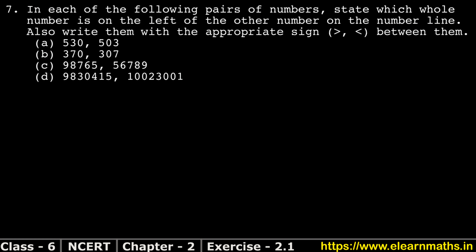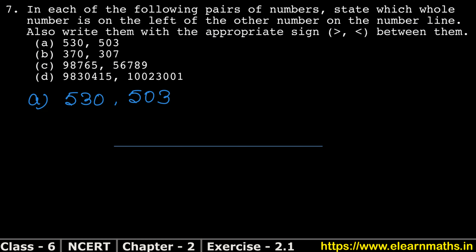So how do we do it? Our first part is 530 and 503. Let's write our first part: 530 and 503. First I will show you the number line. This is our number line. On the number line, we start from 0.